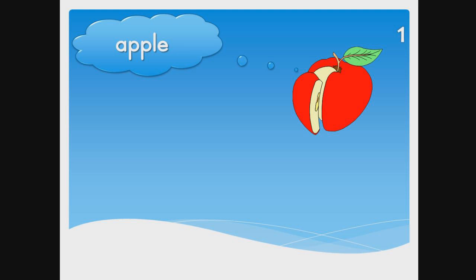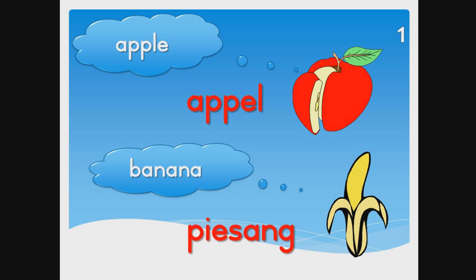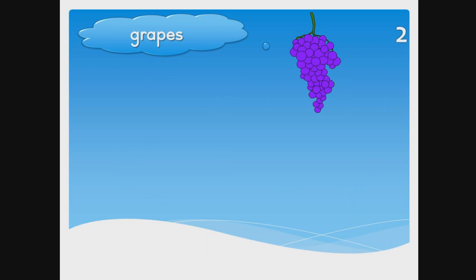In English we would say apple, and in Afrikaans, appel, appel, appel. Banana — pisang, pisang, pisang, pisang.